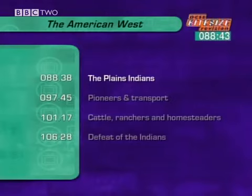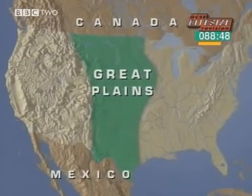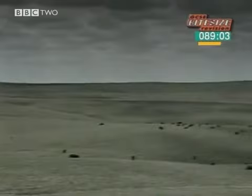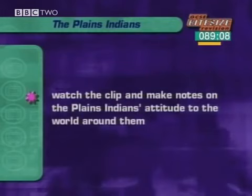The Great Plains is a very harsh environment — fiercely hot in summer, bitterly cold in winter, and sometimes swept by high winds and tornadoes. To the west, the Rocky Mountains, 200 miles wide, rise to 14,000 feet. But the Plains Indians had developed a nomadic way of life well adapted to this environment. As you watch this clip, write a couple of sentences describing the Plains Indians' attitude to the world about them.